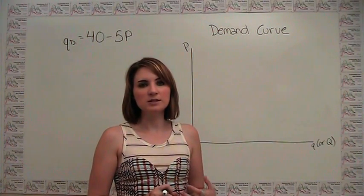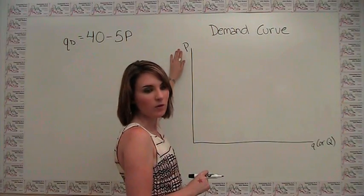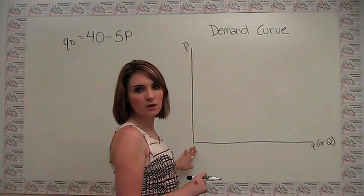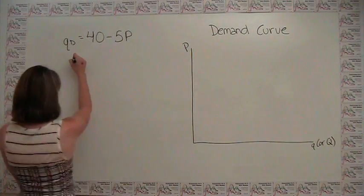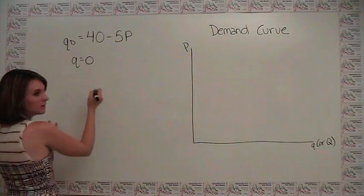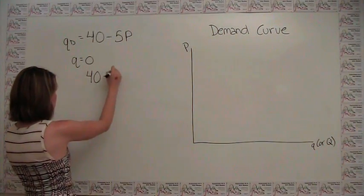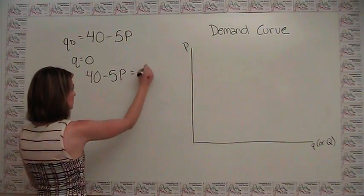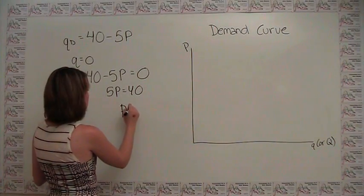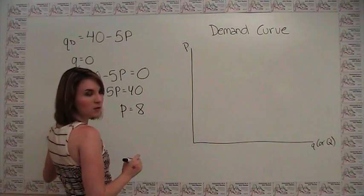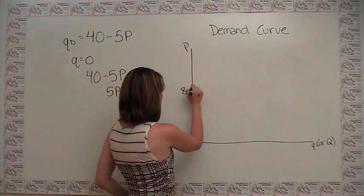So we're just going to think about how can we go about plotting this even though it is in somewhat of a strange form. For a demand curve, the easiest thing to do is just think about what the different intercepts are. So you'll notice that the point on the p-axis here is the point where quantity is equal to 0. So we can go over to our equation and think about, well, if quantity is 0, what is the corresponding price? Well, if quantity is 0, then we just have 40 minus 5p equals 0, or 5p equals 40, p equals 8. So when quantity is equal to 0, p is equal to 8. And we can put a point, maybe write something like this.